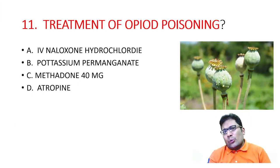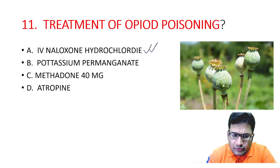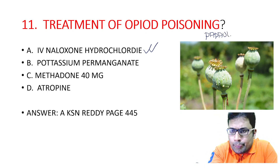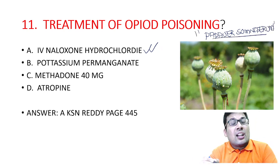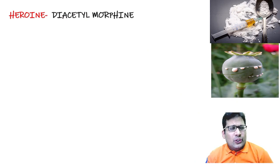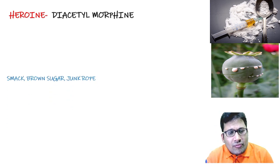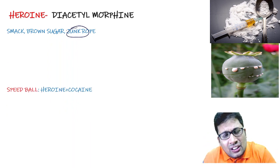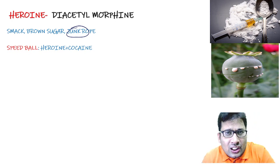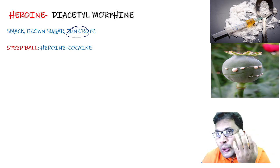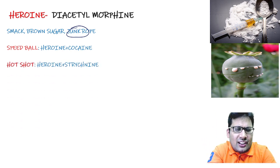Question 11: treatment of opiate poison — very simple question. The answer is IV naloxone. The plant is Papaver somniferum — the opium plant. Khus-khus seeds are non-poisonous. In forensic medicine, heroin (diacetylmorphine) is important — also known as brown sugar, smack, junk, rope. Clinical features: respiratory depression, euphoria, constipation. Speedball = heroin plus cocaine. Hot shot = heroin plus strychnine, which leads to sudden death.